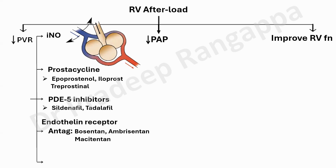The fourth category is endothelin receptor antagonists — bosentan, ambrisentan, and macitentan. But the most important category for an intensivist is the fifth: preventing hypoxemia. Oxygen supplementation and preventing hypoxemia is critically important as a means to reduce pulmonary vascular resistance, because hypoxia causes pulmonary vascular constriction.